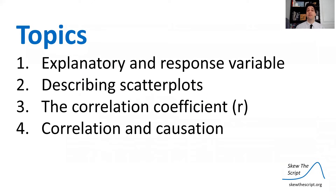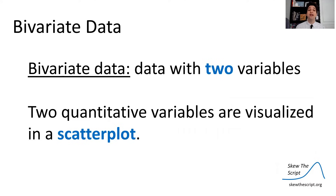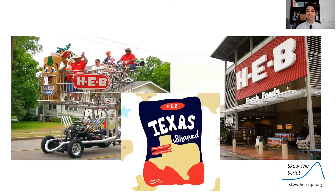First we're talking about explanatory and response variables. We're going to start this unit looking at bivariate data — that's data with two variables — and specifically we're going to look at two quantitative variables. When you have two quantitative variables measuring quantities that are numeric and in order, those are visualized in a scatter plot.